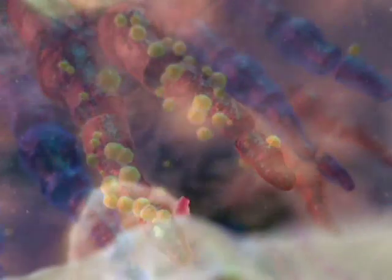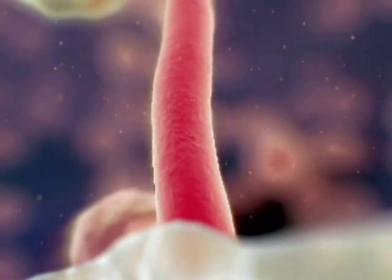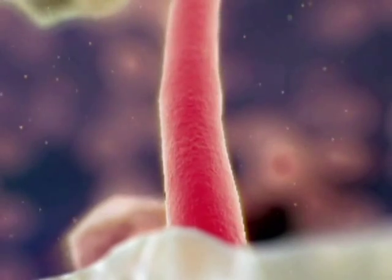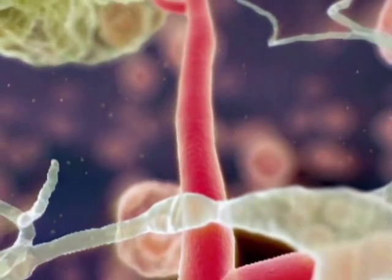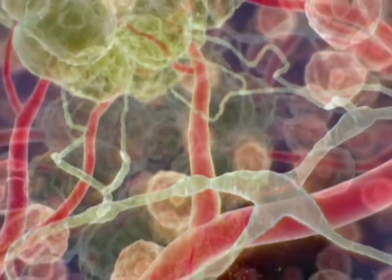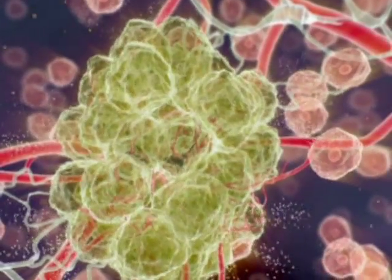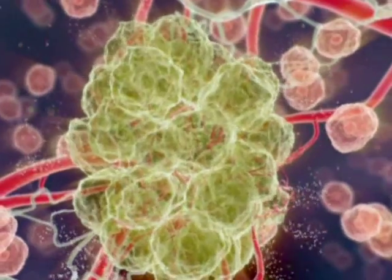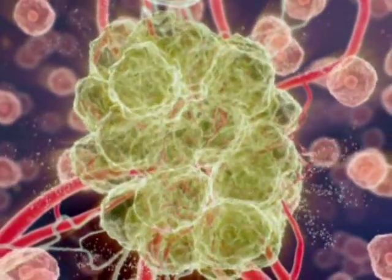New blood vessels are formed that grow towards the cancer cells in the tumor. The tumor now has its own supply of oxygen and nutrients, allowing it to grow in size. In addition, cancer cells can spread to distant sites in the body through the newly created, highly permeable blood vessels.